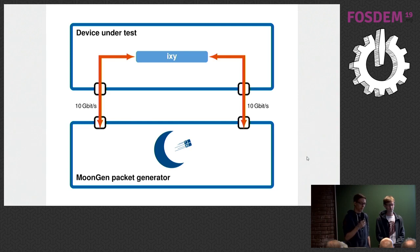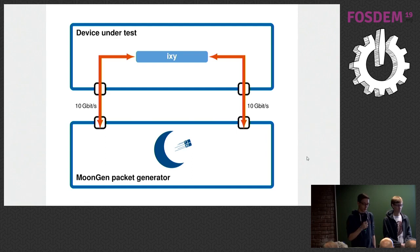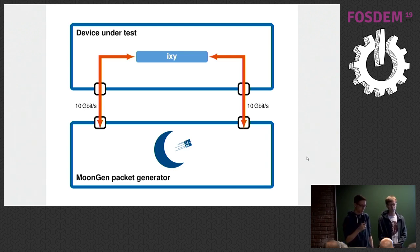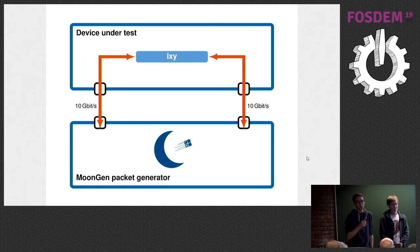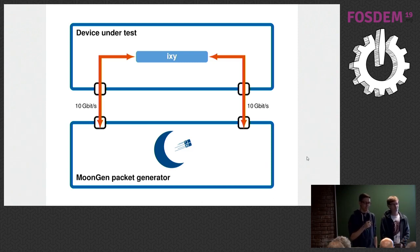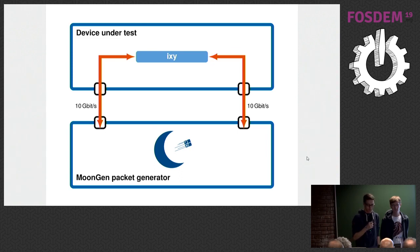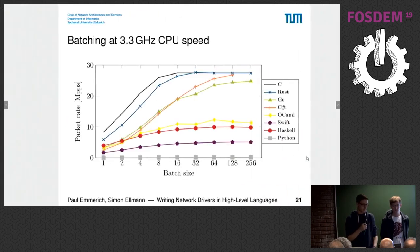Now we have great code, but is it fast? To figure that out, we set up a testbed to benchmark all our drivers. We have two servers — a packet generator and the device under test — connected with two 10 gigabit links bi-directionally. We use MoonGen, written by Paul, as the packet generator. On the device under test, we run a simple bi-directional packet forwarder implemented on top of all our drivers in all the languages.